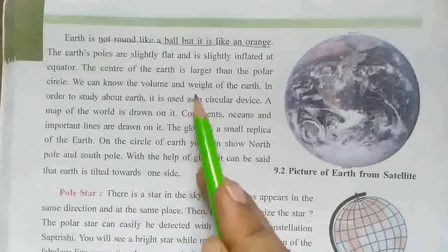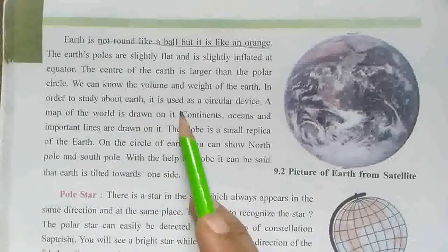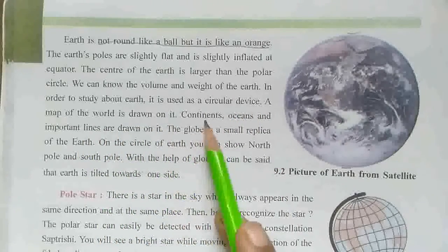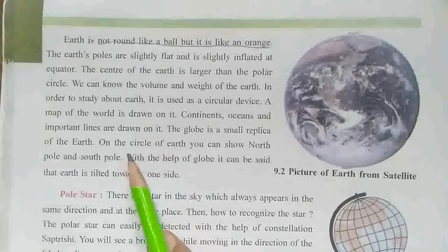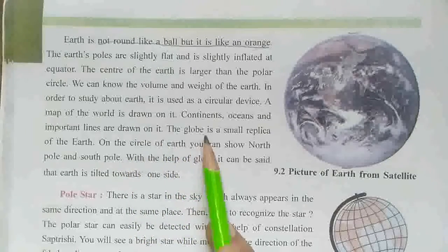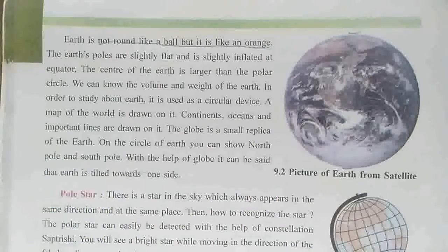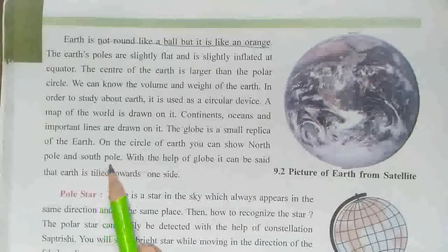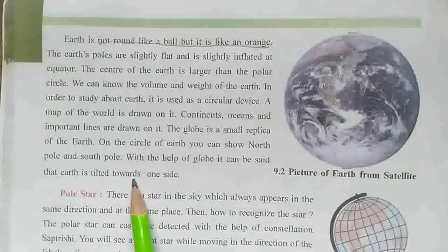We can know the volume and weight of the Earth. In order to study about Earth, a globe is used as a circular device. A map of the world is drawn on it — continents, oceans, and important lines are drawn on it. The globe is a small replica of the Earth. With the help of a globe, you can show the North Pole and South Pole. It can be said that the Earth is tilted toward one side.